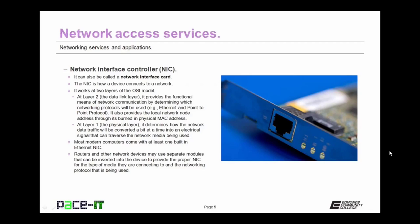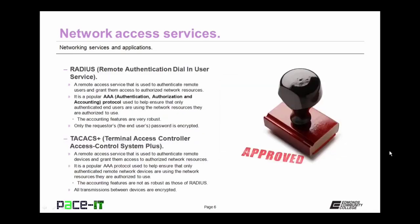Most modern computers come with at least one built-in Ethernet NIC. Routers and other network devices may use separate modules that can be inserted into the device to provide the proper network interface controller for the type of media they are connecting to and the networking protocols being used. Another network access service is RADIUS — Remote Authentication Dial-In User Service. RADIUS is a remote access service used to authenticate remote users and grant them access to authorized network resources. It is a popular AAA protocol — that's authentication, authorization, and accounting — used to ensure that only authenticated end users access the network resources they are authorized to use.